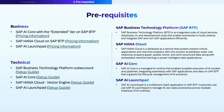SAP BTP is an integrated suite of cloud services, databases, AI, and development tools that enable businesses to build, extend, and integrate SAP and non-SAP applications efficiently. SAP HANA Cloud is a database-as-a-service that enables in-memory query processing and provides a one-stop solution for relational, graph, spatial, vector, and semi-structured data usage, along with embedded machine learning algorithms. SAP AI Core is a managed AI runtime that enables scalable execution of AI models and pipelines, integrating seamlessly with SAP applications and data on SAP BTP. It supports full lifecycle management of AI scenarios. SAP AI Launchpad is a multi-tenant SaaS application that helps customers manage their AI use cases and associated lifecycle across multiple AI runtimes.